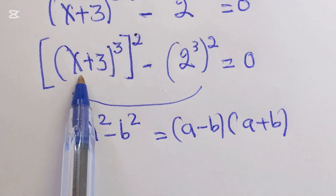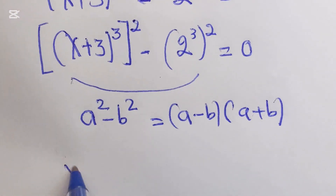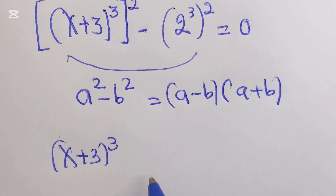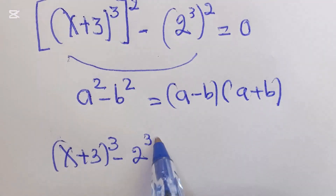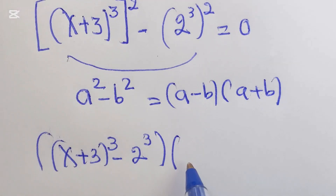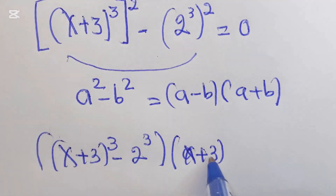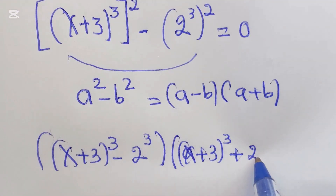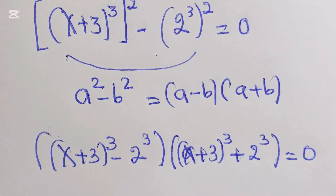Now, this can be a and this one can be b. This will give us x plus 3 cubed, minus 2 to the power of 3, times x plus 3 to the power of 3, plus 2 to the power of 3, which equals 0.